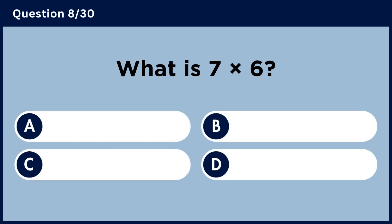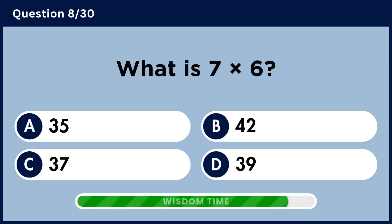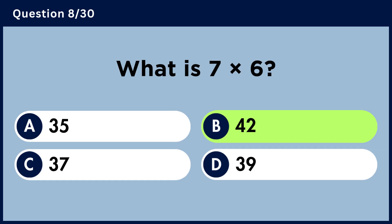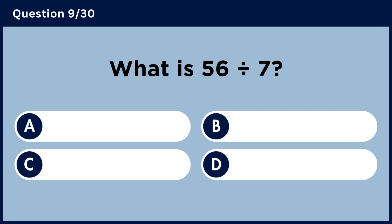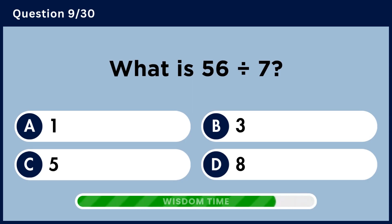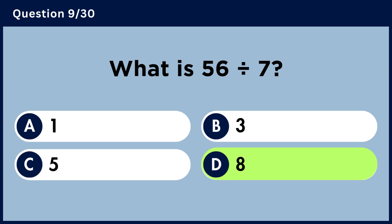What is 7 multiplied by 6? Answer D, 9. What is 56 divided by 7? Answer D, 8.